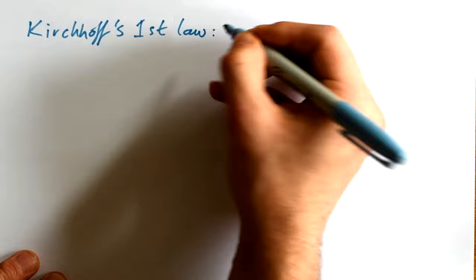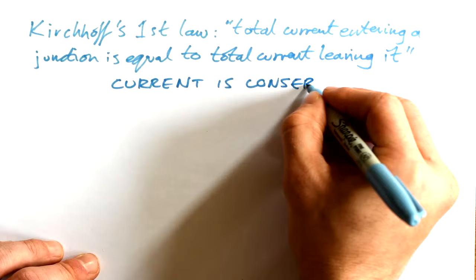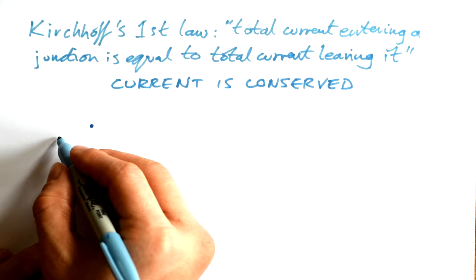His first law is this: total current entering a junction is exactly equal to the total current leaving it. Or in other words, current is conserved at junctions. And yes, you might think that that is pretty darn obvious, but it's a very useful law to think about.